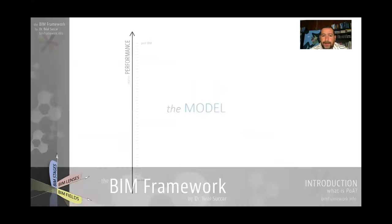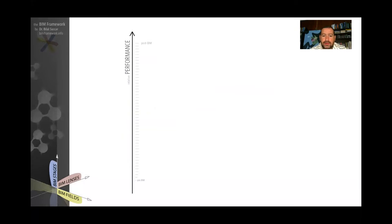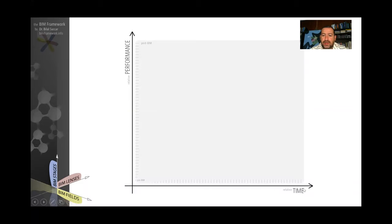Let's look at the model. The model has two axes. On the y-axis there's performance, going from the bottom from pre-BIM to post-BIM — so going up is an increase in performance. On the x-axis there's time, or relative time, which represents the gradual or dramatic increase in performance from a point in time moving forward. It's not absolute time, meaning the representation does not tell you how many weeks, months, or years separate one point from another. It gives you a relative understanding of the relationship between these different performance milestones.